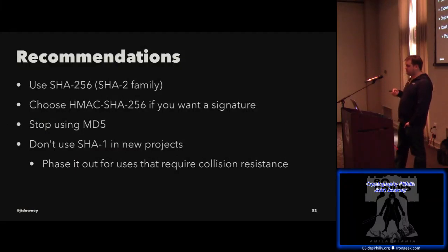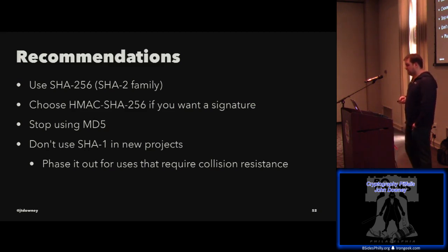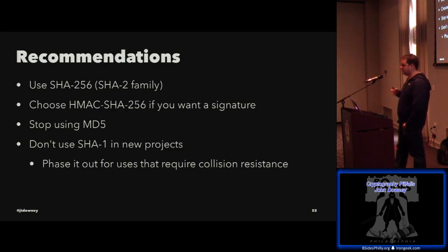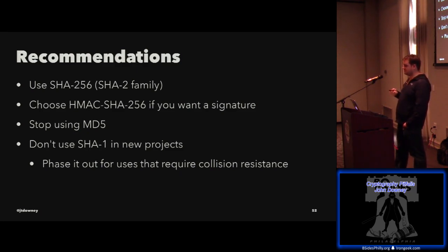If you need a fingerprint, use SHA-256. I know SHA-3 is around but there's a lot of debate — I'm not ready to jump on that bandwagon and still recommend SHA-256. If you need a MAC or signature, HMAC with SHA-256 is a really good choice. Stop using MD5 — if you have a system that uses it, make a plan to get off it. Don't use SHA-1 in new projects and think about phasing it out, especially if your system requires collision resistance, as that's the first thing to go.